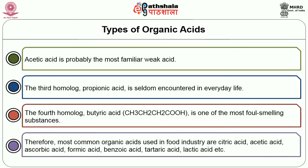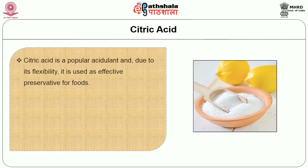The most common organic acids used in the food industry are citric acid, acetic acid, ascorbic acid, formic acid, benzoic acid, tartaric acid, lactic acid, etc. First, let us look into the important one — citric acid. Citric acid is a popular acidulant and due to its flexibility it is used as an effective preservative for foods.